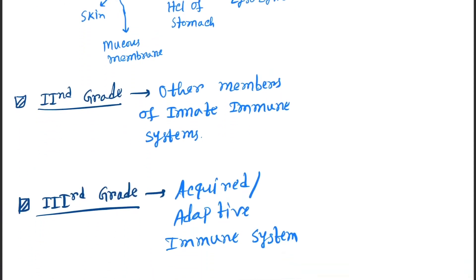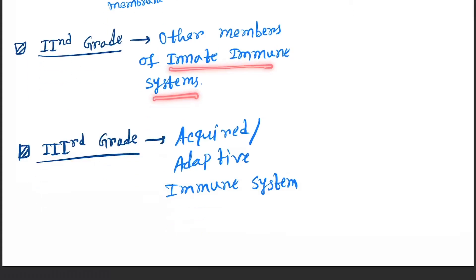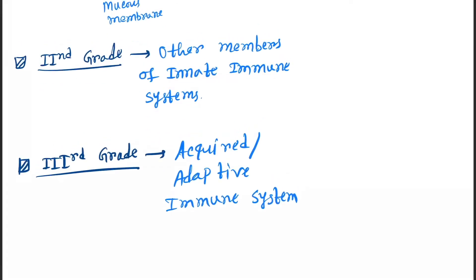Next is the second grade immunity provider, the innate immune system. And next is third grade immunity provider, that is acquired or adaptive immune system. Now let's understand how they work. Let's take this as a filter.